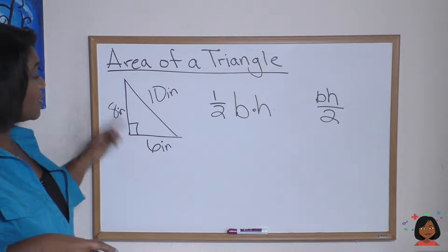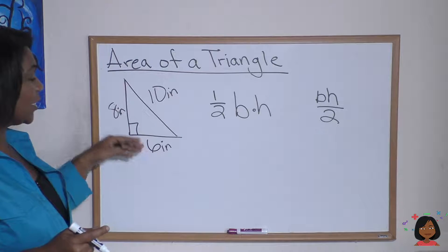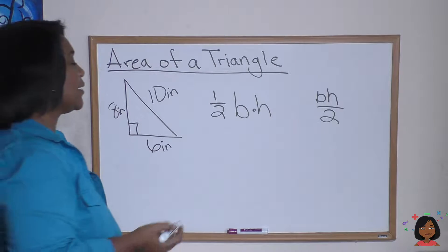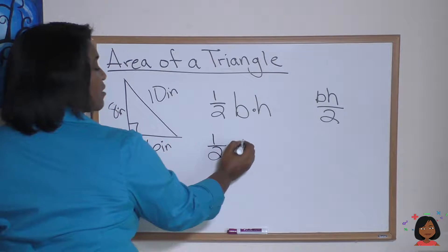Remember, we're only looking at base and height when it comes to area. So let's write it in the equation: one half times my base, which is six, times my height, which is eight.